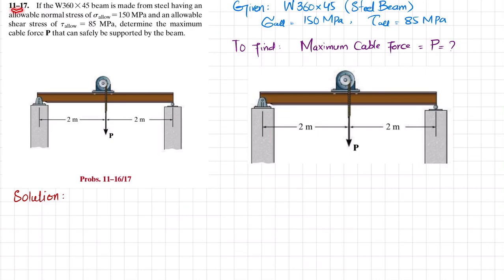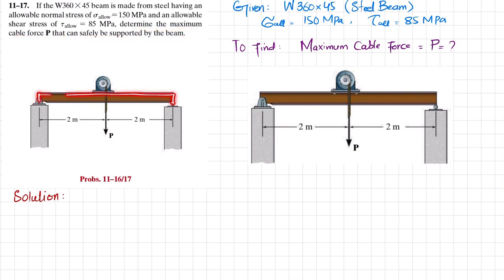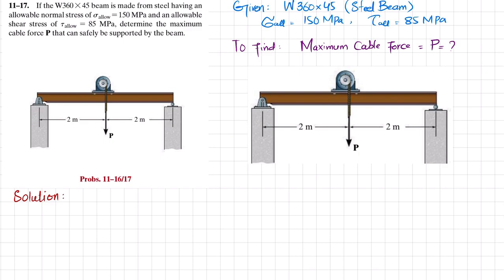Welcome back. Problem 11-17: a W360×45 beam is made from steel having an allowable normal stress of 150 MPa and an allowable shear stress of 85 MPa. Determine the maximum cable force P that can safely support the beam. This is a simply supported beam and we need to find the load P that can be applied.